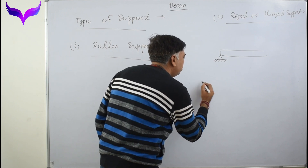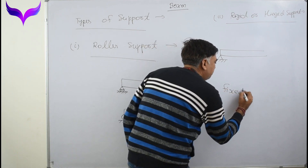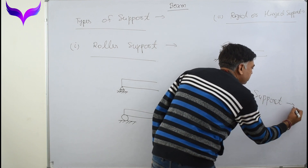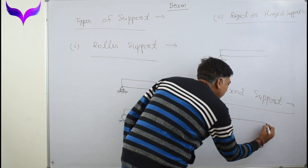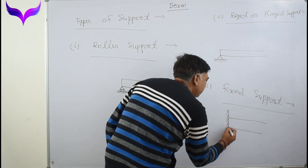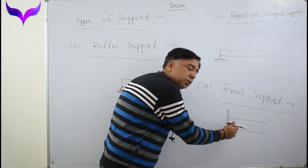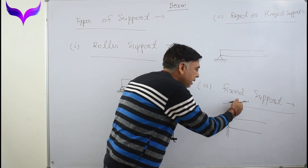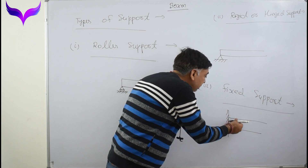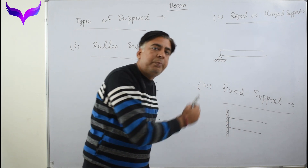The third type of support is called a fixed support. In the case of a fixed support, the beam is fixed at this end. The beam does not move in the horizontal direction, does not move in the vertical direction, and neither does it rotate about this point.